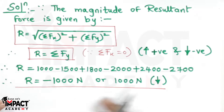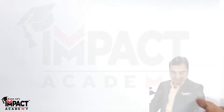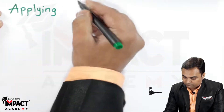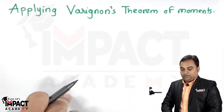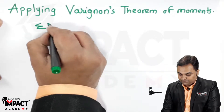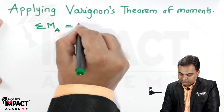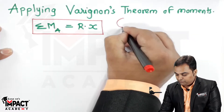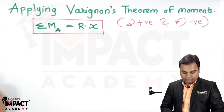Now that the magnitude is known, that is the first answer. We need to find the location of the resultant force, and for that I will apply Varignon's theorem of moments. This theorem states that the sum of moments of all forces about a particular point A should be equal to the moment of the resultant, which is R into x. The convention is: clockwise moments taken as positive, anti-clockwise moments as negative.